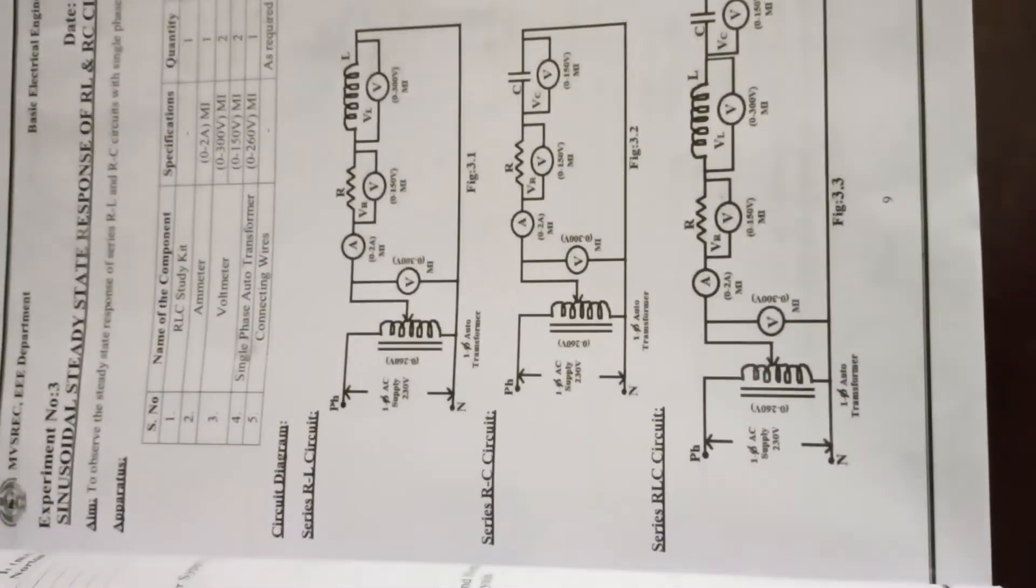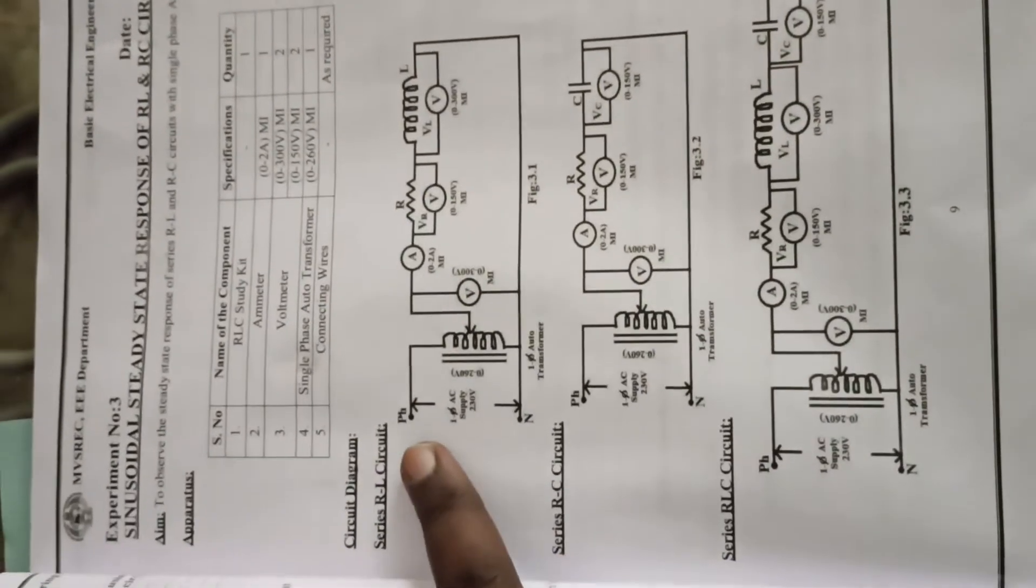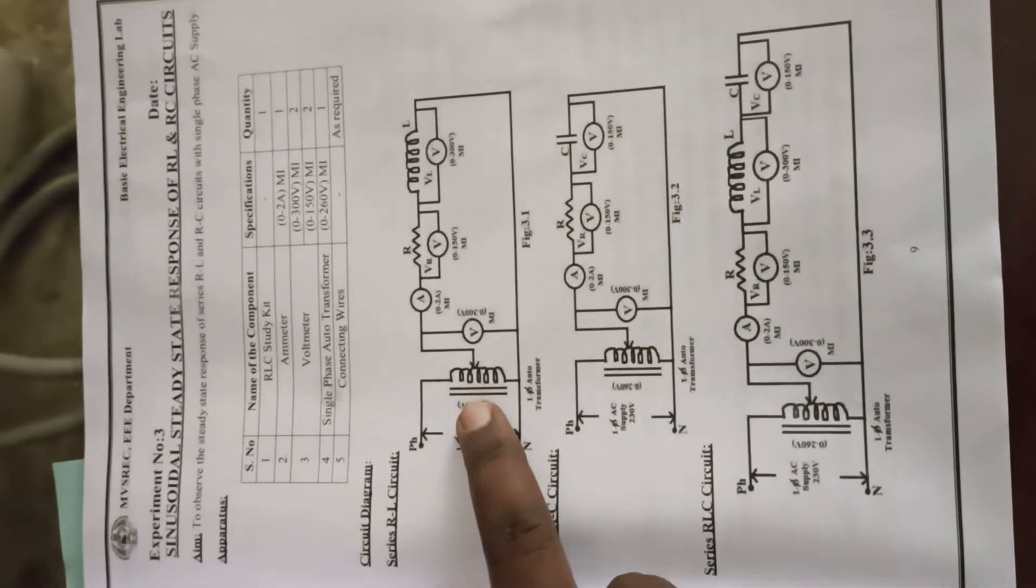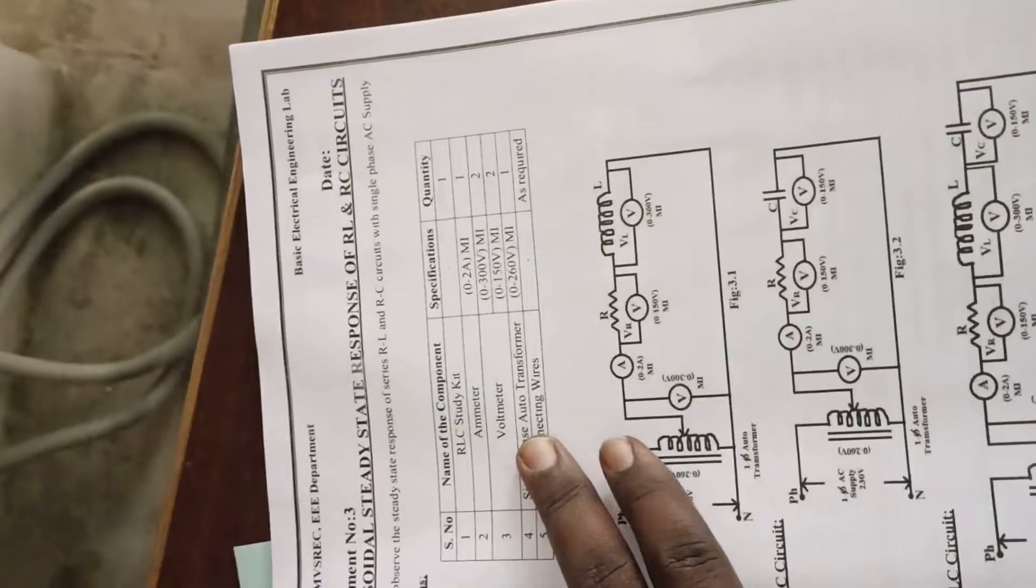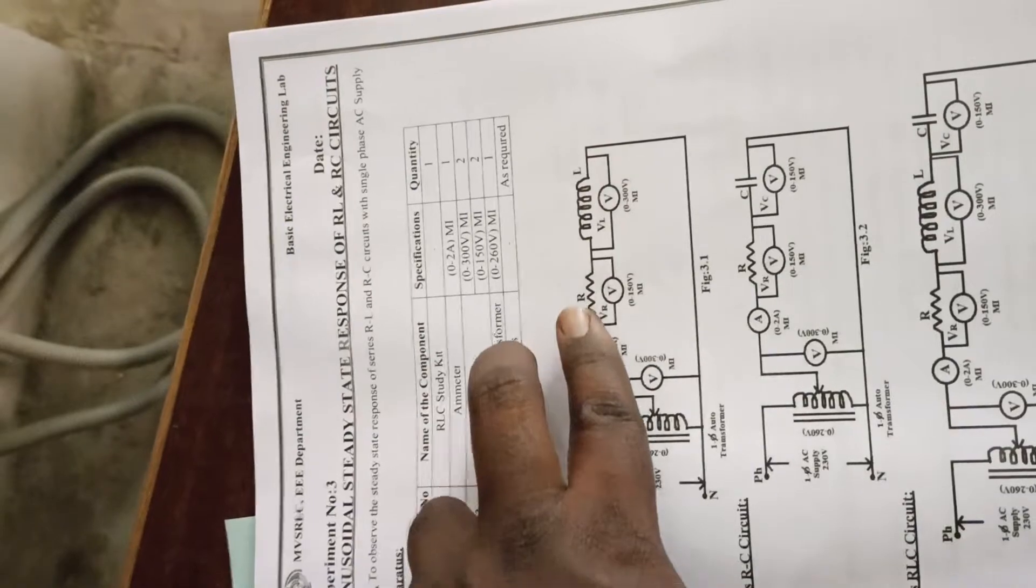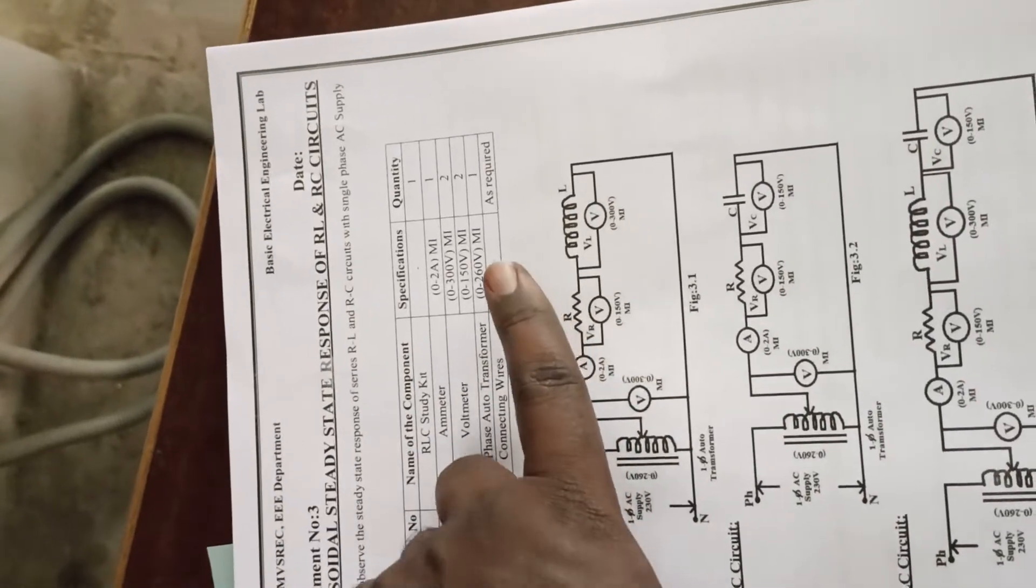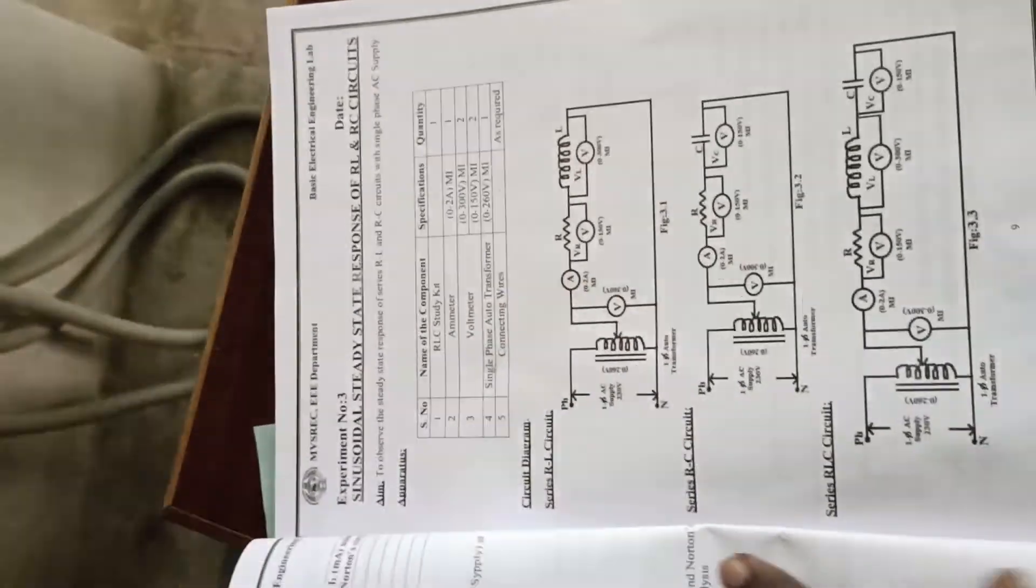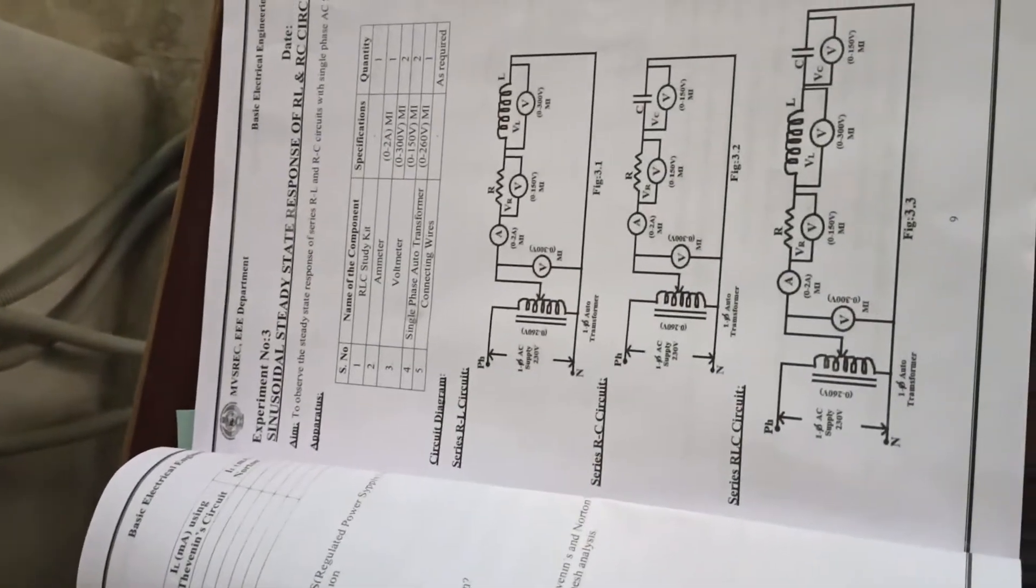Looking at the circuit diagram, we can see that you have phase and neutral here as it is a single phase supply. An autotransformer is there and voltmeter and ammeter is connected. You have one resistance and an inductor is taken across which the voltmeters are to be connected.